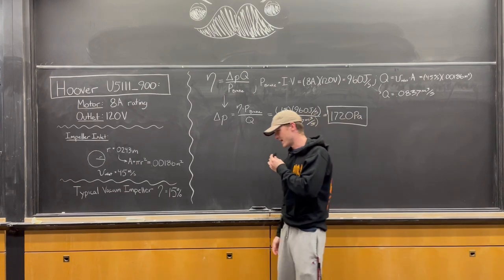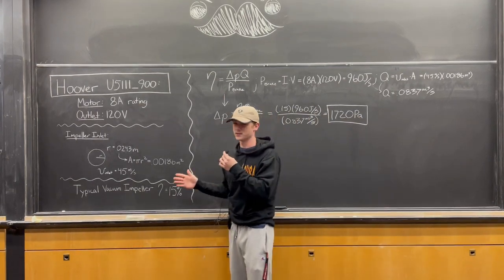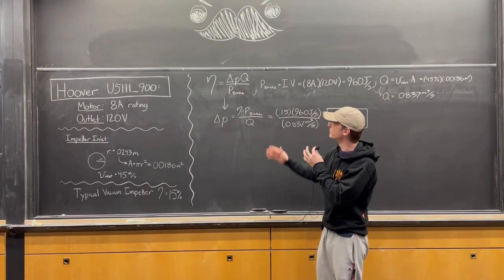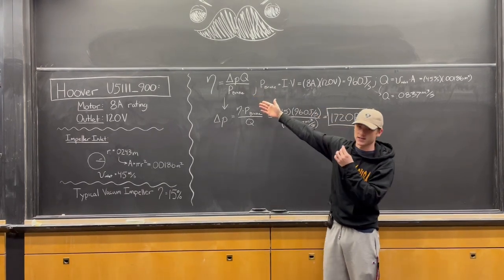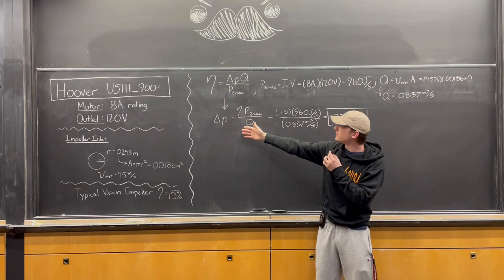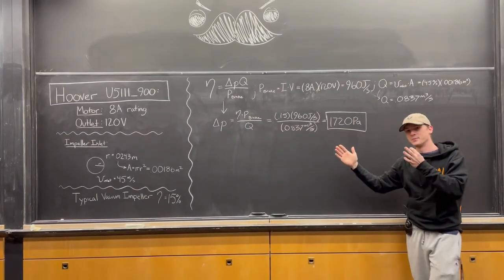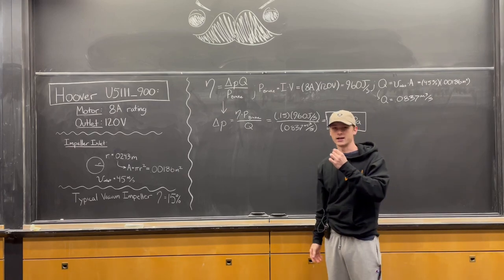We found that a typical vacuum impeller has an efficiency of about 15%. That's the last piece we need for this equation, which has ΔP as the only unknown. Solving for it, we get 1720 Pascals, which aligns with our Bernoulli analysis.